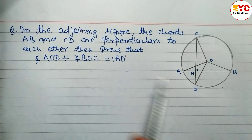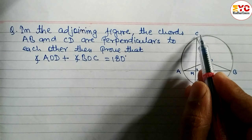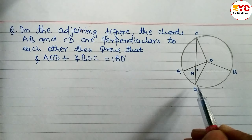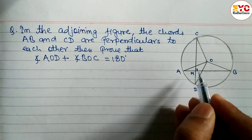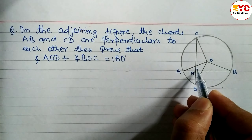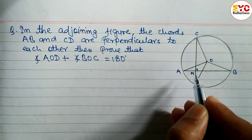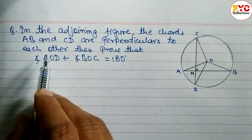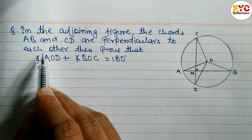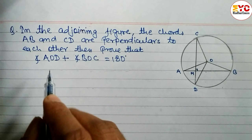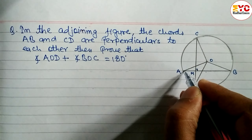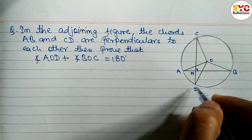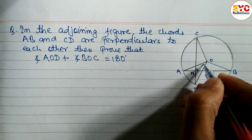...two chords AB and CD are perpendicular to each other. You can see here, if this angle is 90°, then the other is also 90°. What we have to prove is angle AOD first — look at angle AOD here.